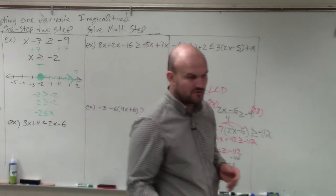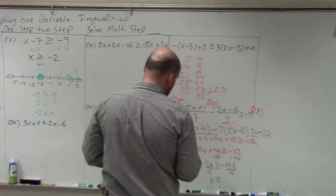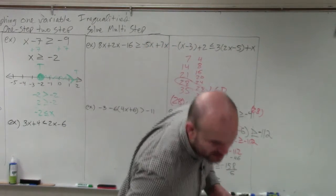I'm getting 79 over 3 as the reduced fraction, which is approximately 26.33.